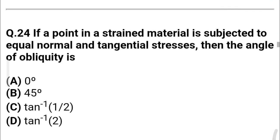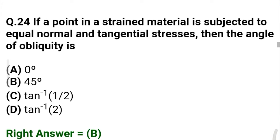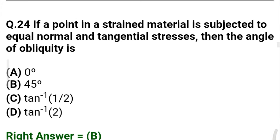Next question: If a point in a strained material is subjected to equal normal and tangential stresses, then the angle of obliquity is — option A: 0°, option B: 45°, option C: tan⁻¹(1/2), option D: tan⁻¹(2). The correct answer is option B: 45°.